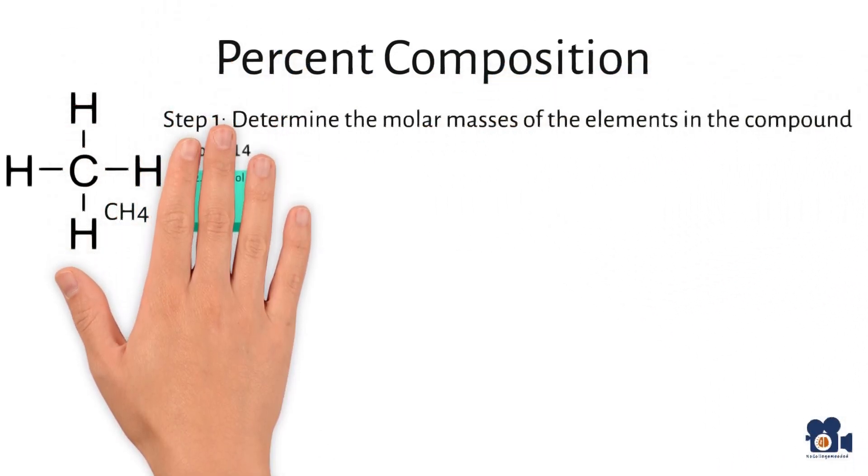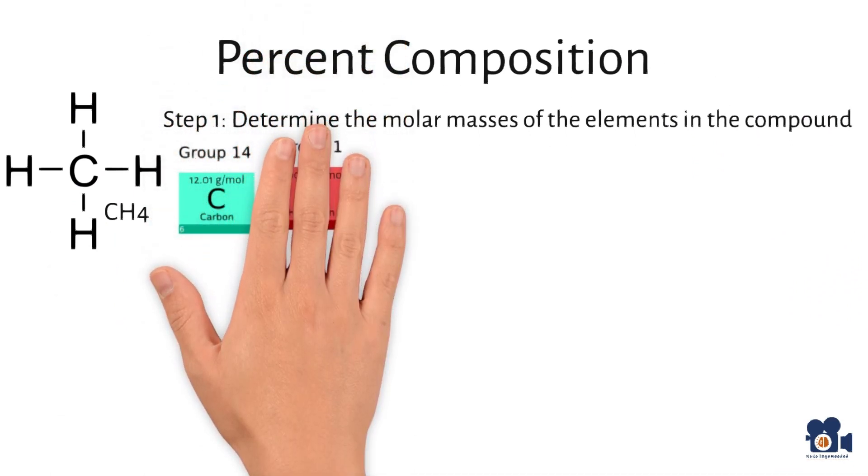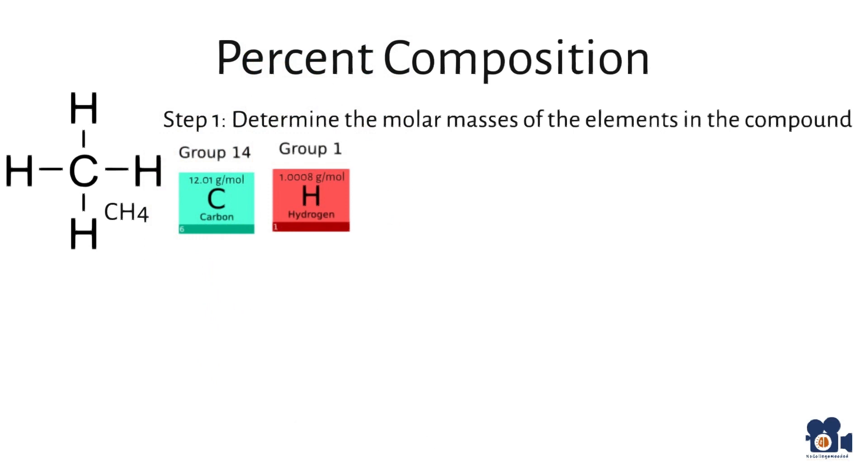The molar mass of carbon is 12.01 grams per mole. The molar mass of hydrogen is 1.008 grams per mole.